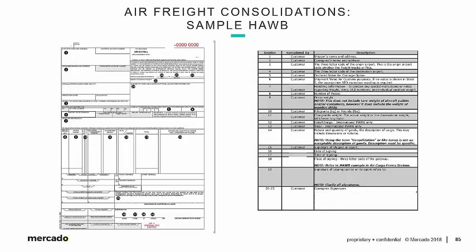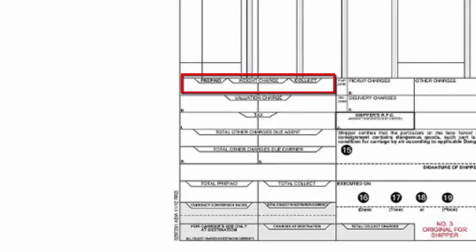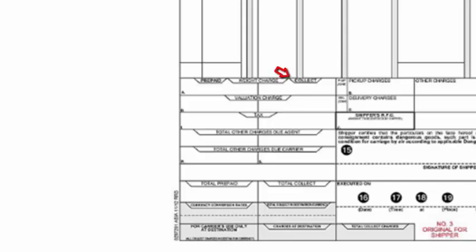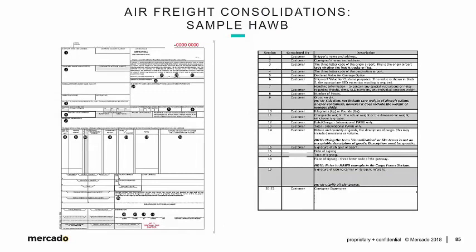One thing we want to point out is the lower left-hand corner of the House Bill — this is where the charges are listed and divided as either prepaid or collect. This is where the expression of the chosen Incoterms rule comes into play. If the vendor is paying certain charges, they will show up on the prepaid side of the column. In our examples, where the importer controls the freight, most of the charges — the total air freight charge and any additional charges — will show up on the right-hand side as freight collect to us as the U.S. importer.